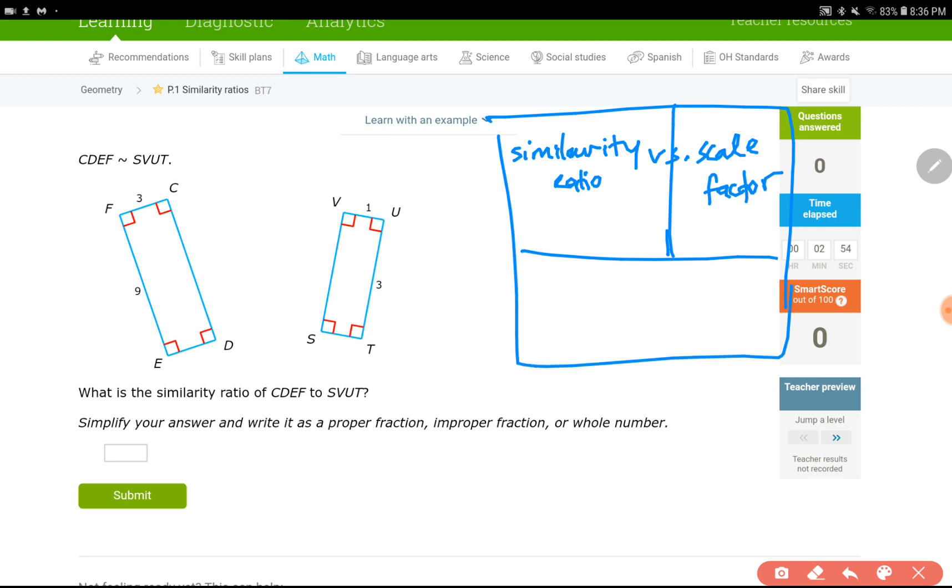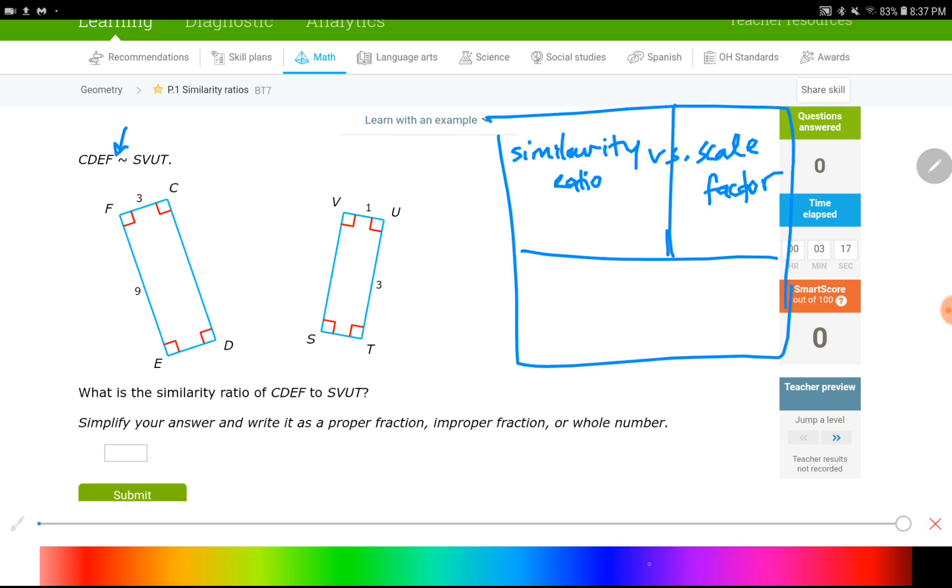Let's get started. The question tells us that the two figures are similar. I know that because of that symbol. That means the figures are similar. My question is what is the similarity ratio of CDEF to SVUT? So what's the similarity ratio of the first figure to the second one? To answer this question, all we have to do is find two corresponding lengths such as this right here and that one here. Because the shorter sides of the similar rectangles are going to correspond to each other.